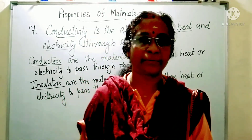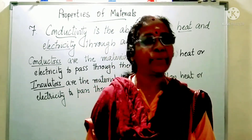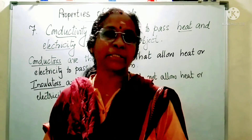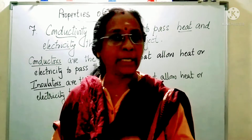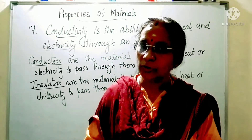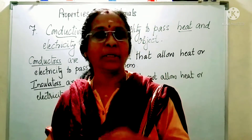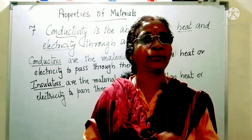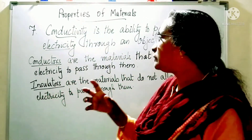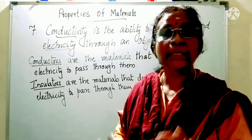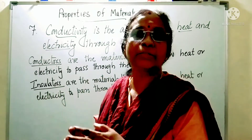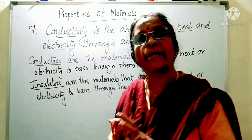The next property is conductivity. Conductivity is the ability to pass heat or electricity through a material. Some materials allow heat and electricity to pass through them, and some will not. The materials which allow heat and electricity to pass through them are called conductors, and those which do not are called insulators.